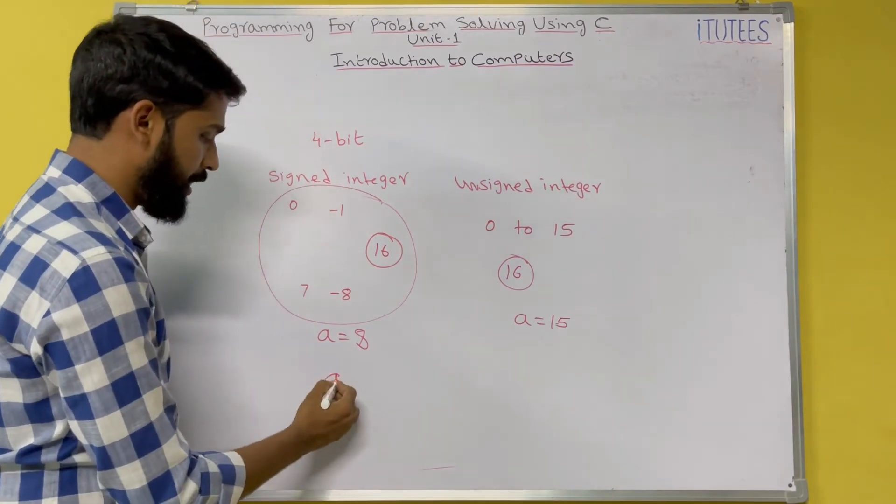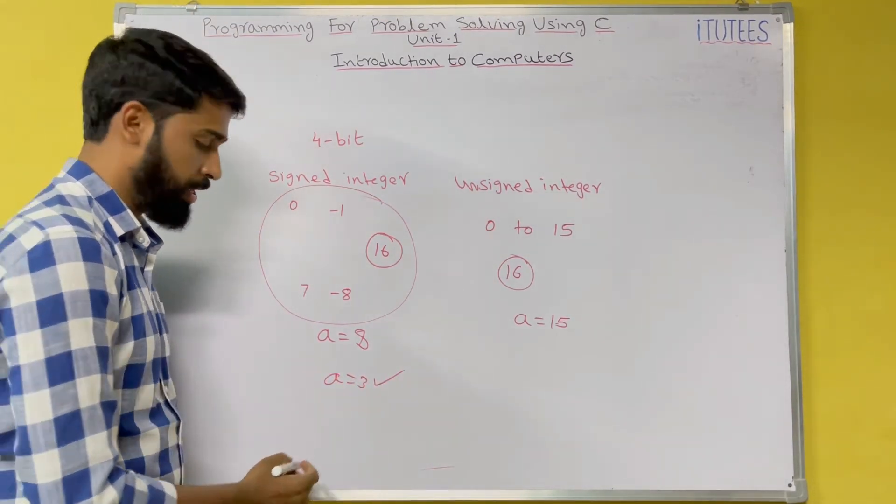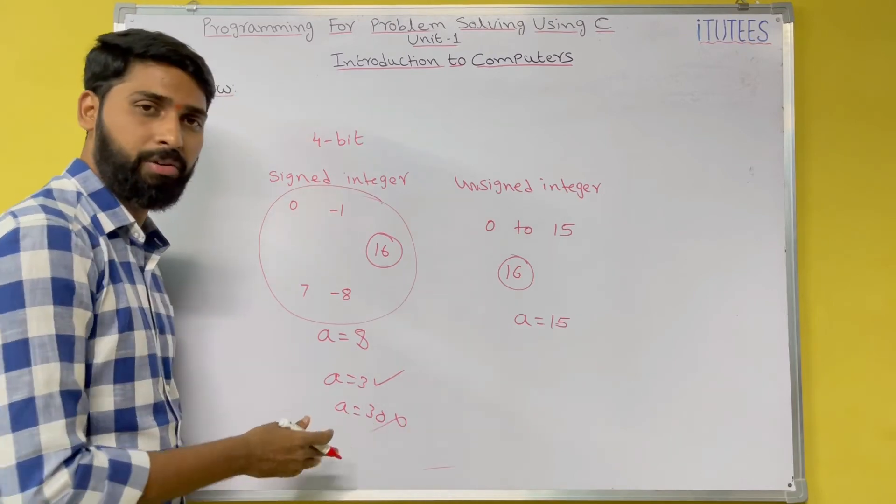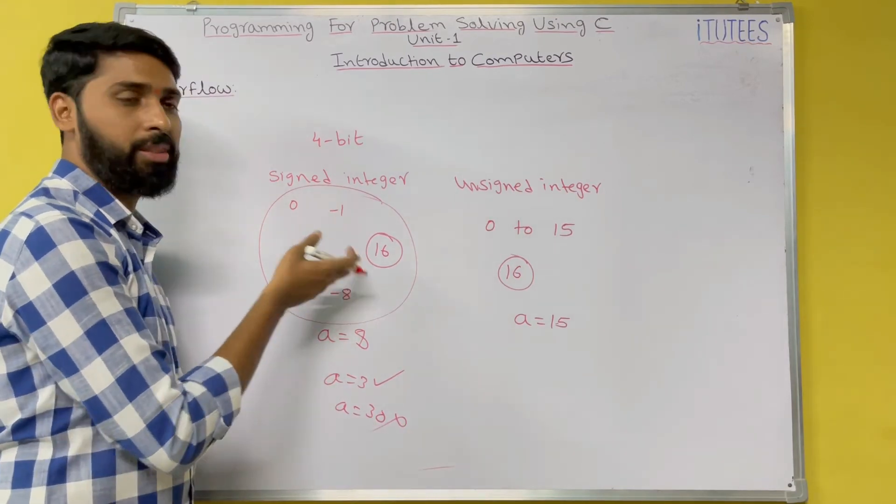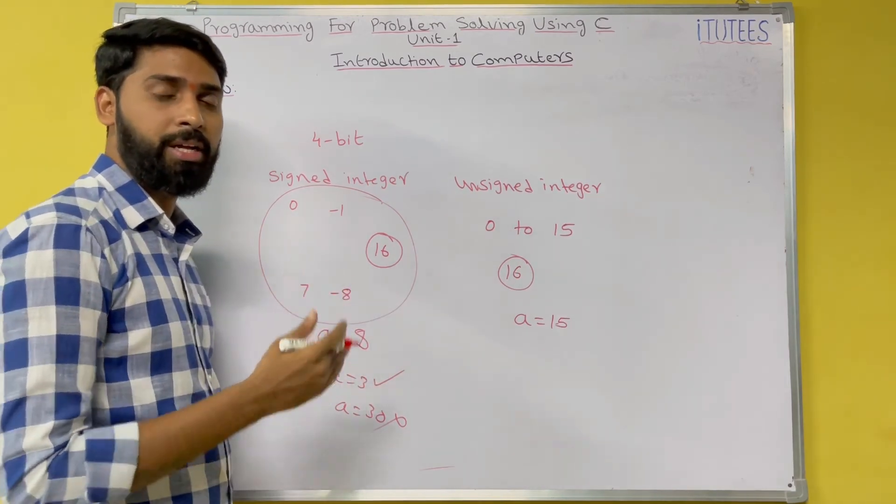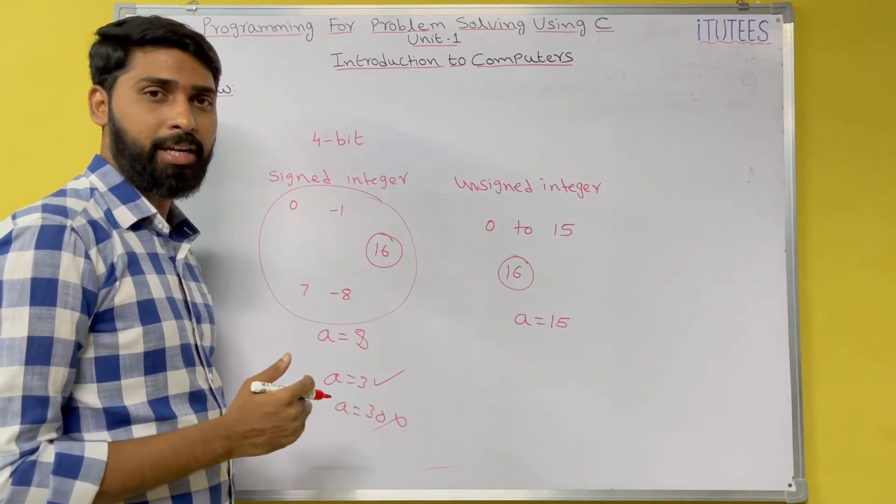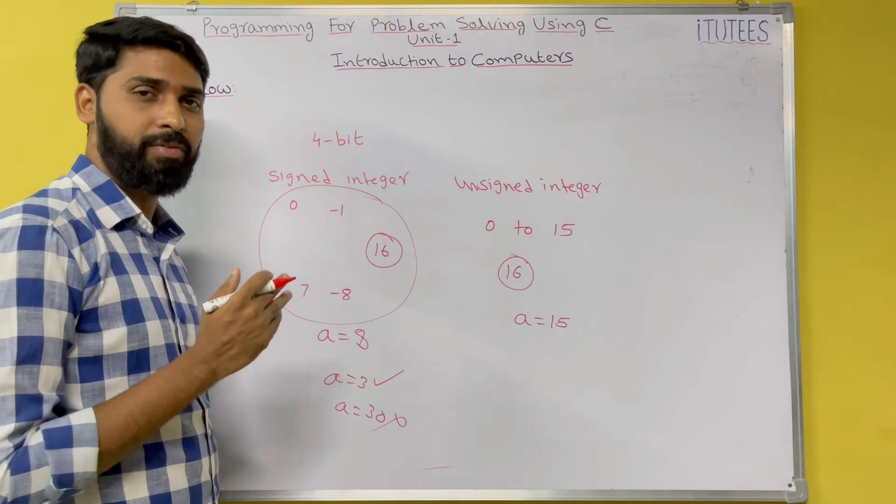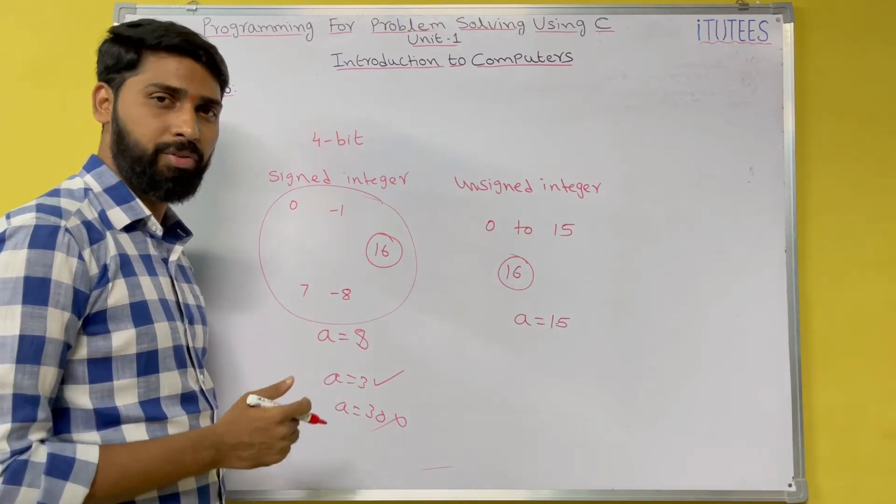That means if I give A equals to 3, this is okay. If I give A equals to 30, that is not okay. Why? It is not in the range. So based on this technique only, the ranges of the data types is decided. We can discuss about this in our future classes.